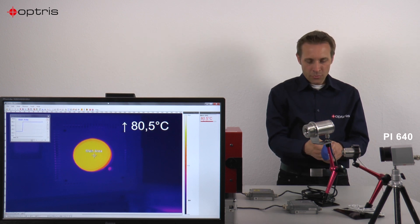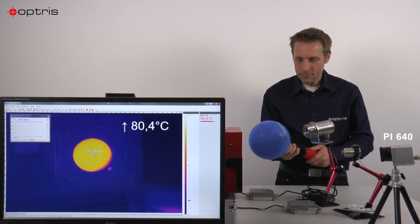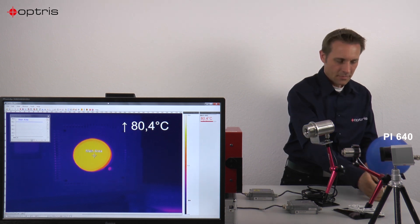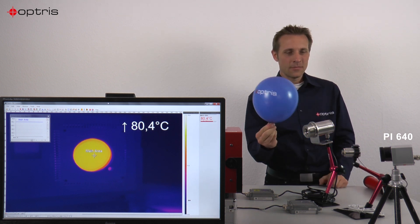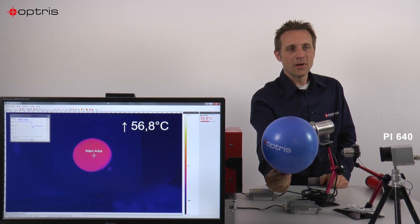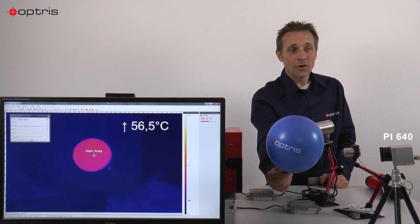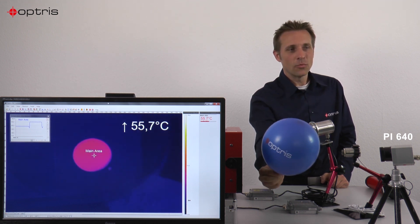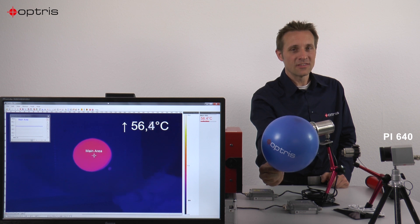Now I will push air into the balloon and we will see what happens. You can see that the balloon is transmissive with a wavelength of 8 to 14 micron. You can also see that the transmissivity is now lower than before without the balloon. So we can correct — we can decrease the transmissivity value with our software PixConnect to get the same temperature.